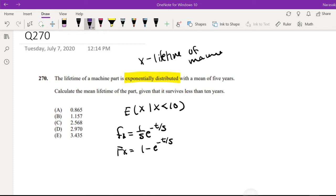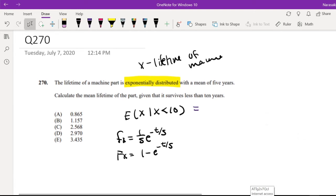This is a conditional expectation, so we need to find the expectation of X given X is less than 10, divided by the probability that X is less than 10.